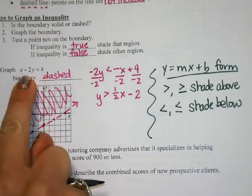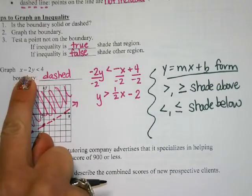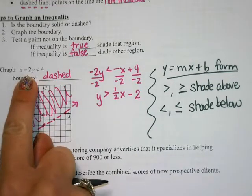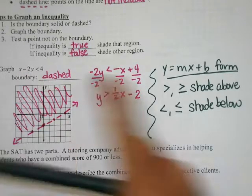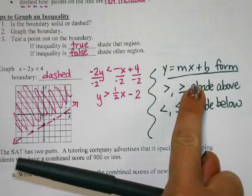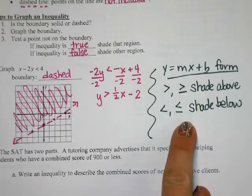Would that work over here in the original standard form? No, because we divided by a negative and it switched the inequality. So it has to be in slope-intercept form in order for you to use the trick to shade.